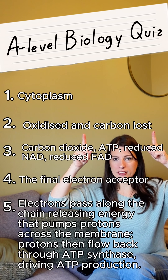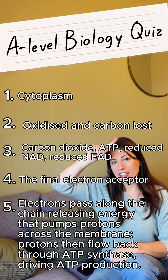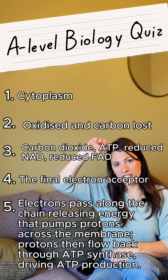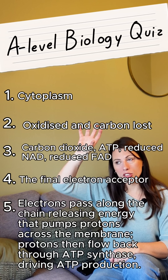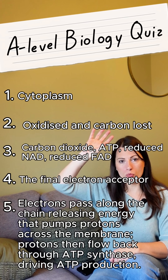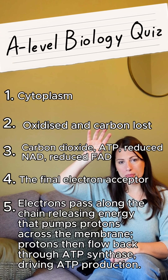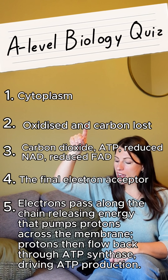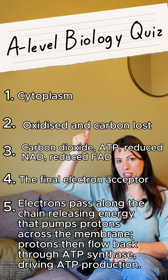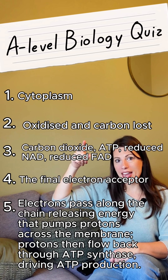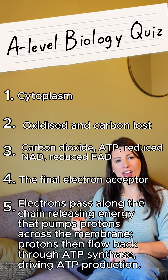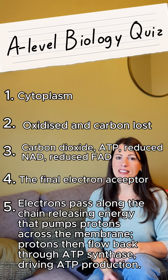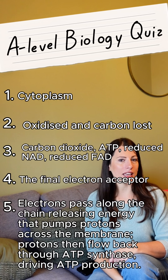That creates an electrochemical gradient where there are lots of protons on one side of the membrane. Those protons can then move down their concentration gradient through ATP synthase, and that is how the ATP is produced.